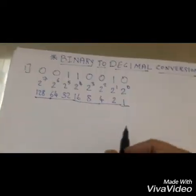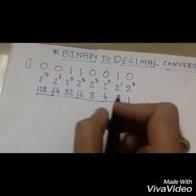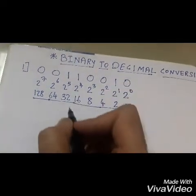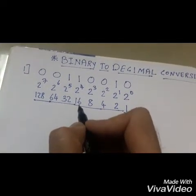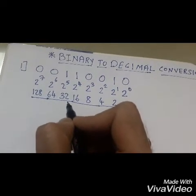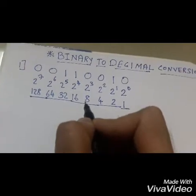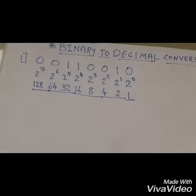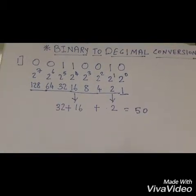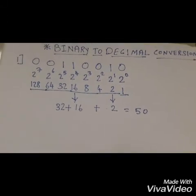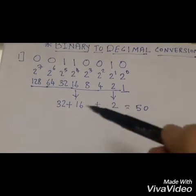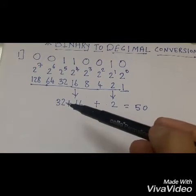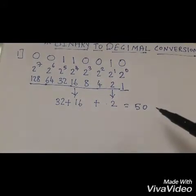In this example, we bring down the values where there is a 1. The numbers we get are 2, then 16, and then 32. So we take the addition of these three numbers and we easily get the decimal number. The numbers we got are 2, 16, and 32.